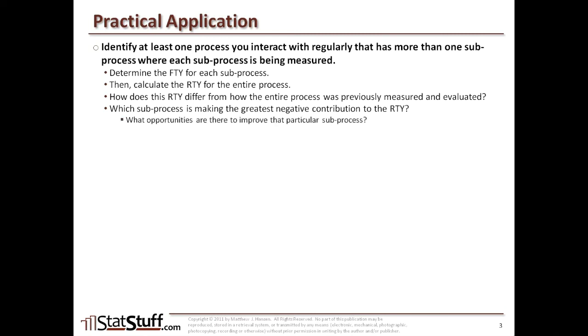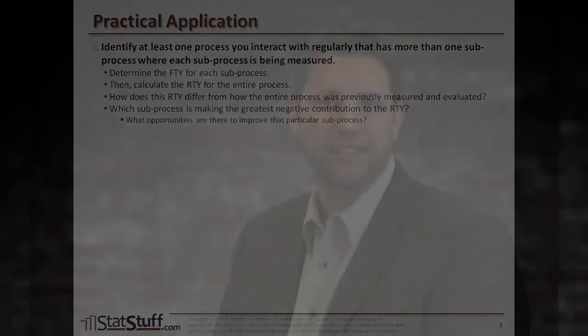What are the opportunities to improve that particular sub-process that's causing the greatest negative contribution to the rolled throughput yield? That wraps up this lesson. Check out statstuff.com for many more resources that can help you achieve powerful results. I'm Matt Hansen. Thanks for watching.